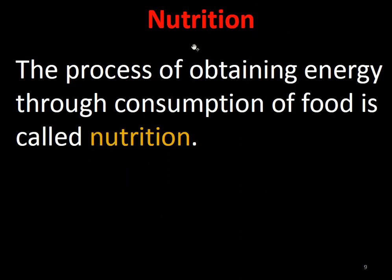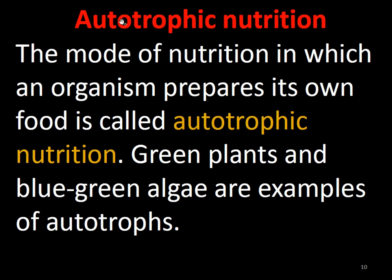What is nutrition? Nutrition means food — the process of obtaining energy through consumption of food. So the process by which organisms obtain energy through consumption of food is called nutrition. The different types include autotrophic nutrition — where 'auto' means it prepares its own food. All green plants and certain blue-green algae are examples of autotrophic nutrition.